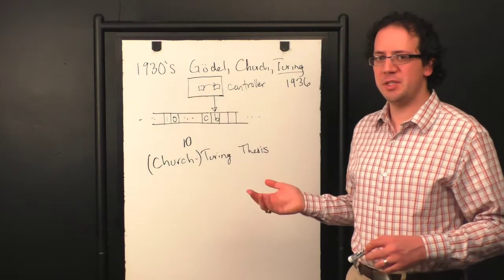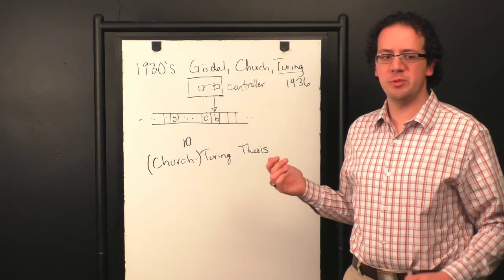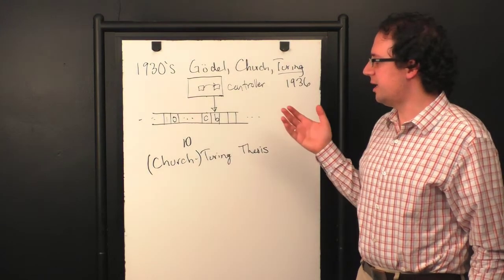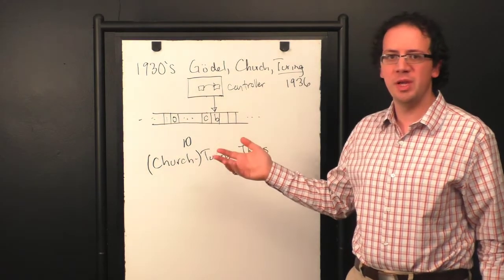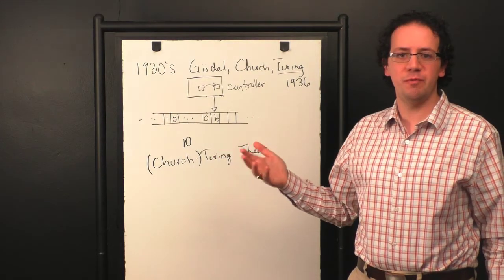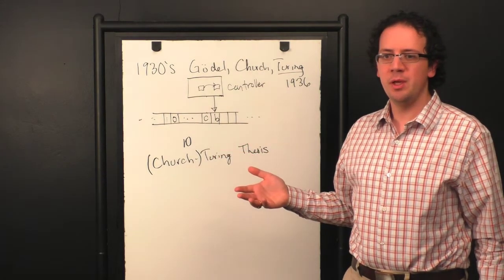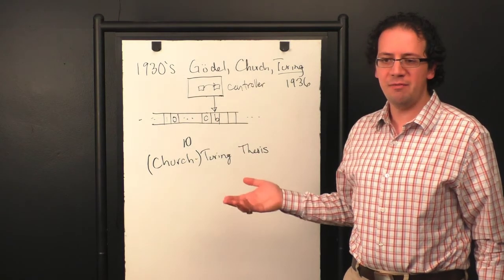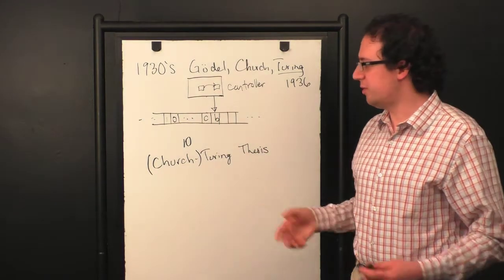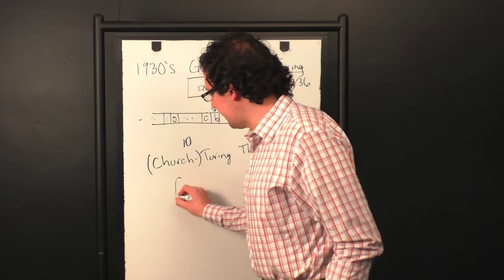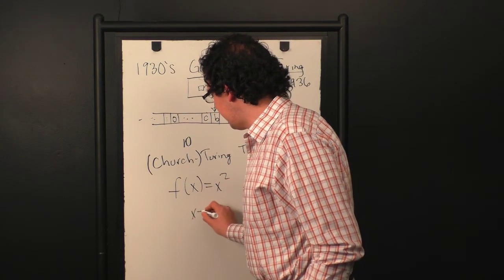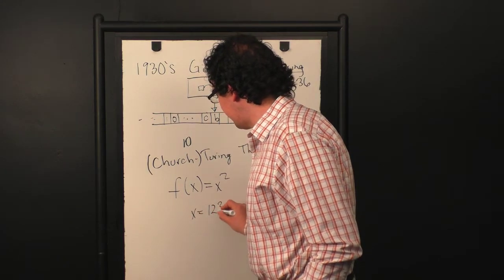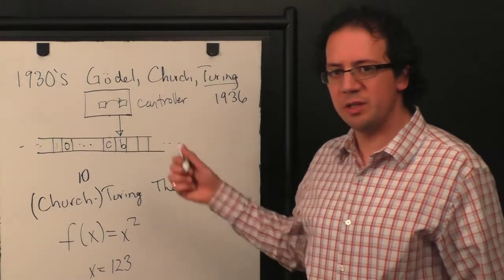Now, I should say that this model of computation is specifically for the setting where you have a discrete set of inputs, like numbers or strings of symbols, and a specific function that you want to apply to them. So if you have that, say you want to compute the function, I don't know, f of x equals x squared, and I give you some number like x equals 123. So this fits into this framework.